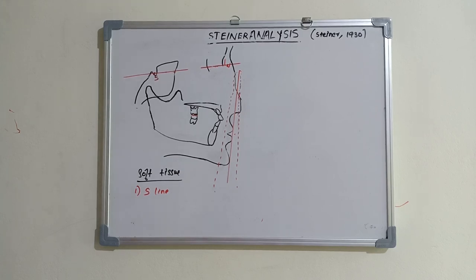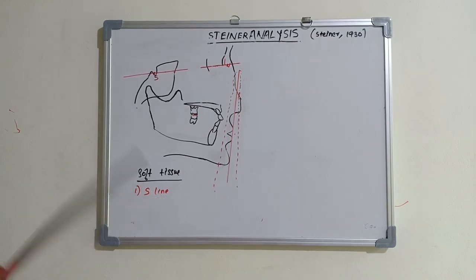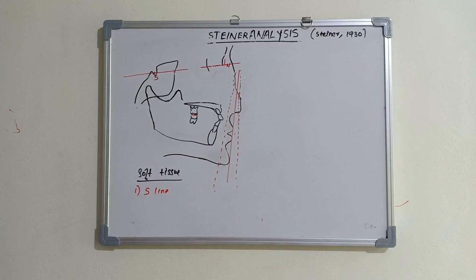So that covers all of Steiner's analysis, including the skeletal parameters, dental parameters, and soft tissue parameters. I will come up with another session on Dentistry and More - thank you.